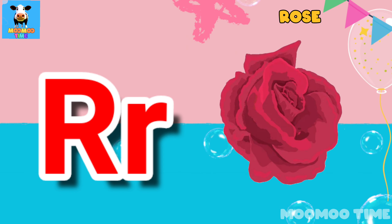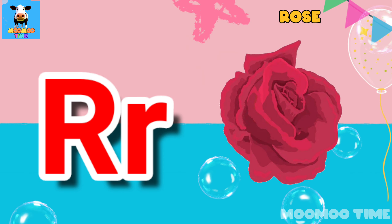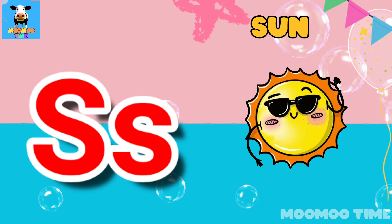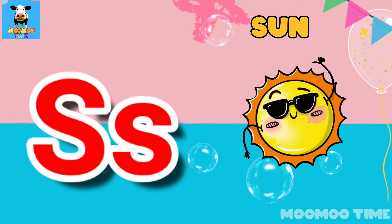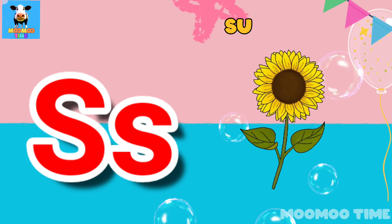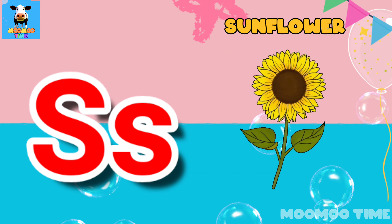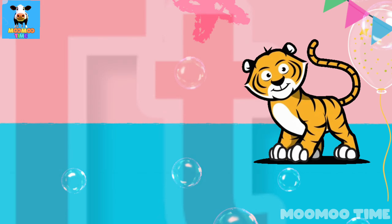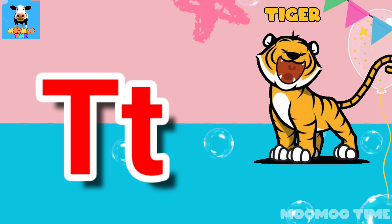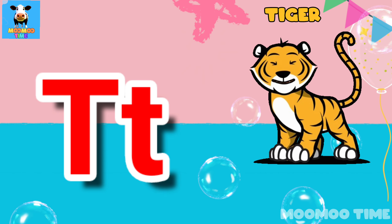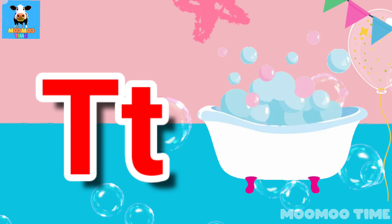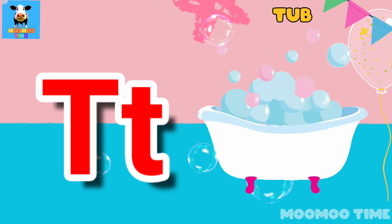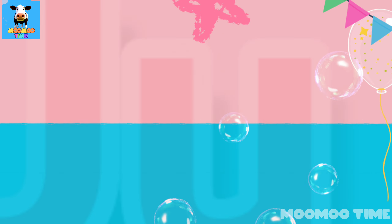R for rainbow. R for rose. S for sun. S for sunflower. T for tiger. P for duck.